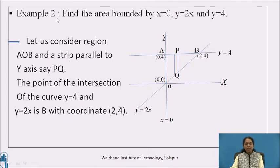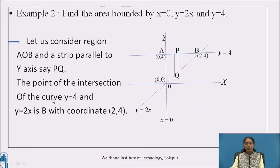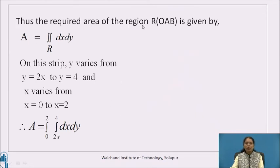Let's have one more example for practice. Find the area bounded by x = 0, y = 2x, and y = 4. Consider the region O-A-B bounded by all three curves, with a strip parallel to the y-axis, PQ. The point of intersection of y = 4 and y = 2x is point B, with coordinates (2, 4). The required area of region O-A-B is given by A = ∬_R dx dy.